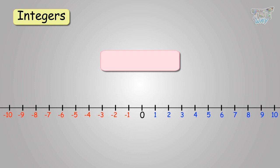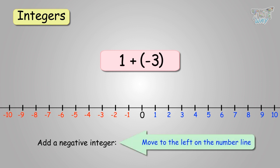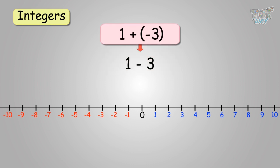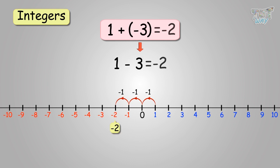Now, let's learn how to add negative integers. You have to add negative 3 and 1. Now, here's the thing to remember: when you add a negative integer, you move to the left, as in the case of subtracting a positive integer. So, 1 plus negative 3 is the same as 1 minus 3, and you will move towards the left. Start at 1 and move 3 places to the left: 1 to 0, 0 to negative 1, and then negative 1 to negative 2. You get negative 2 as the final answer. So, 1 plus negative 3 equals negative 2.